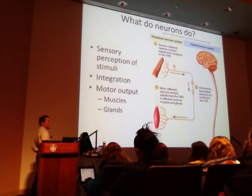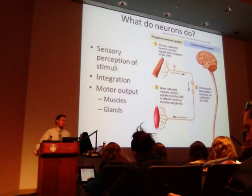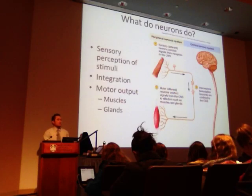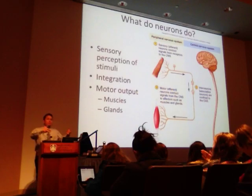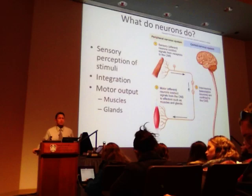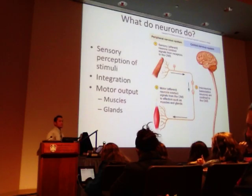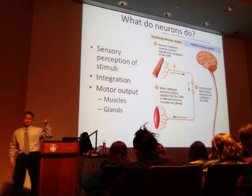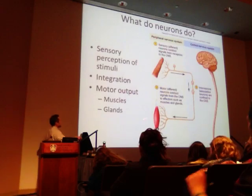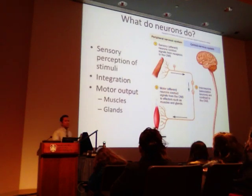Sometimes the output isn't muscles like walking — sometimes the output may be glands or organs that secrete something. Think about a meal you just had. There's input to the GI tract saying you have compounds to chemically break down, which is digestion. So you release enzymes from glands to handle the carbohydrates, fats, or proteins consumed. We have sensory input, then integration, then motor output.